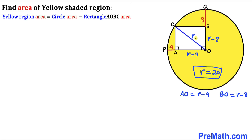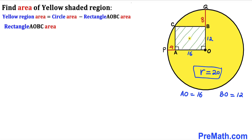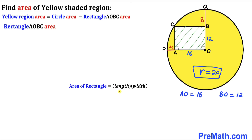With r = 20, AO = 20 − 4 = 16 units, and OB = 20 − 8 = 12 units. The area of rectangle AOBC with side lengths 16 and 12 is 16 × 12 = 192 square units.